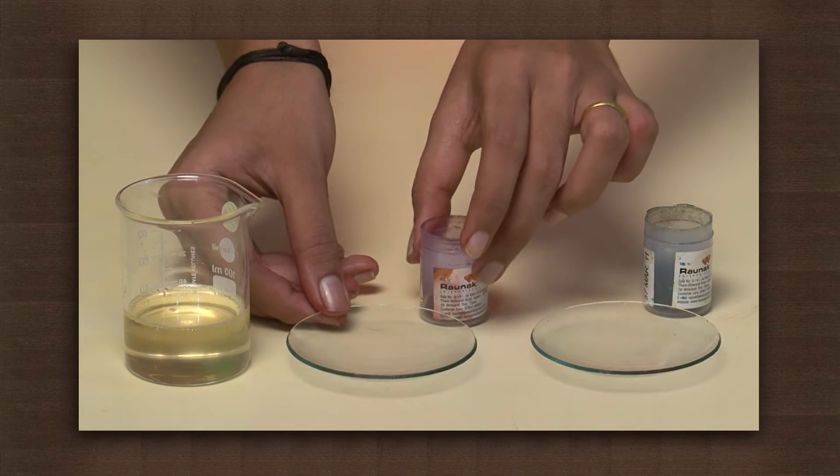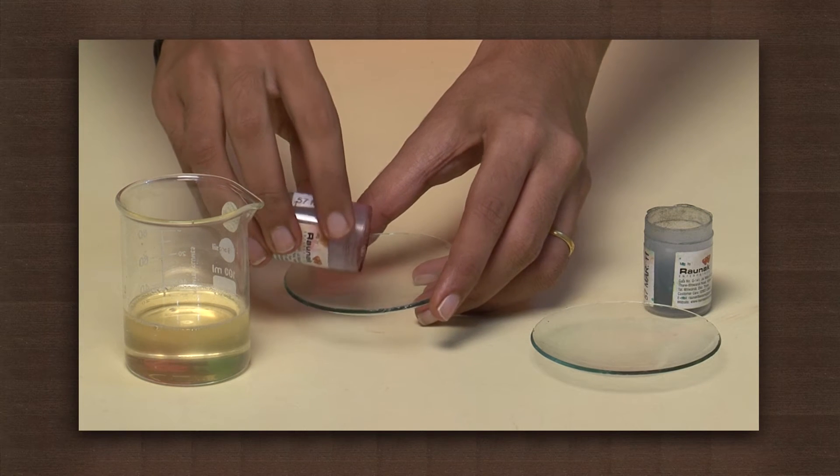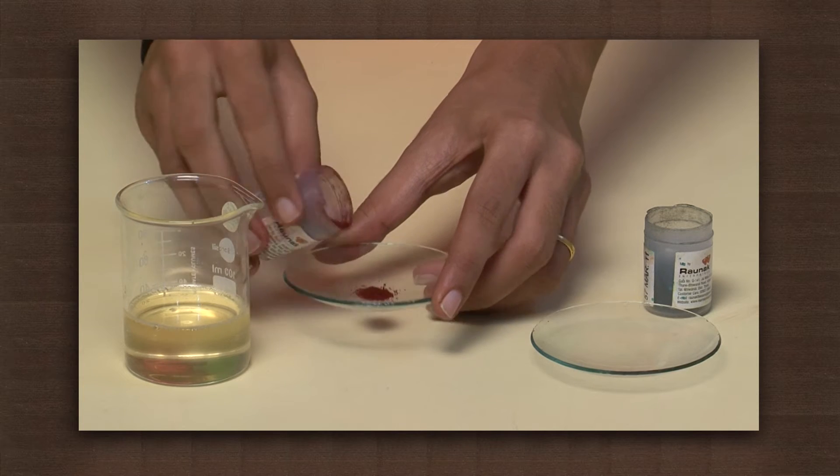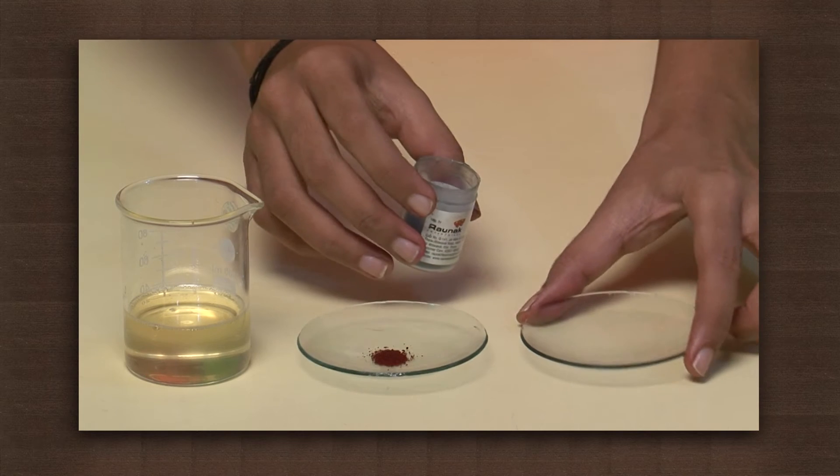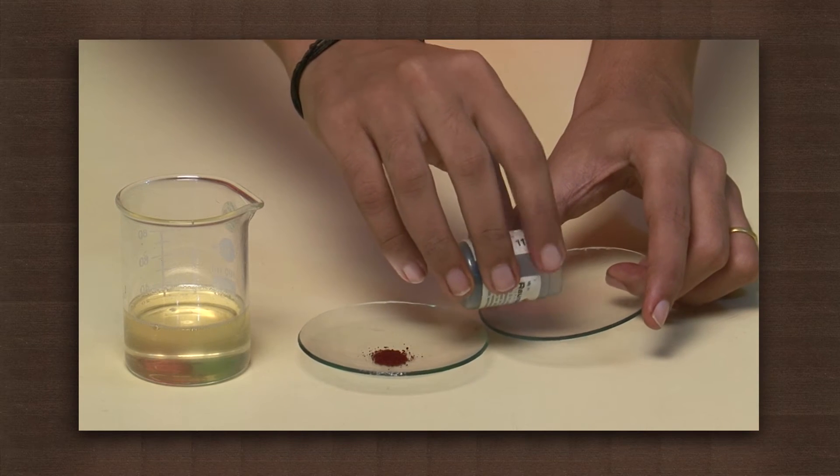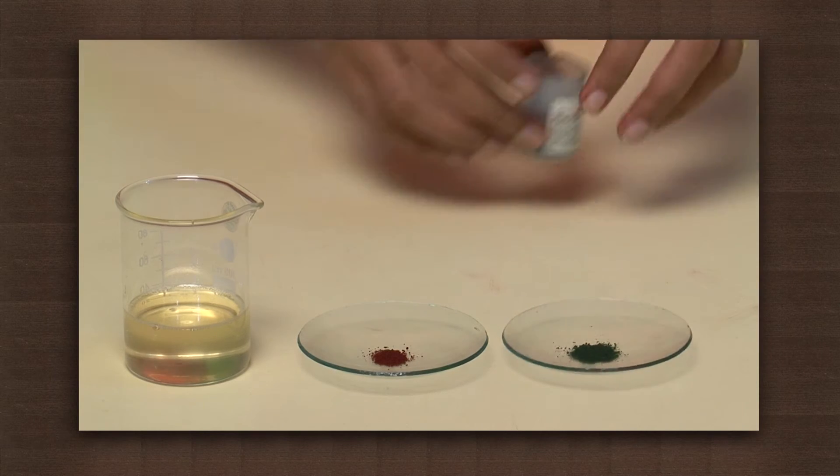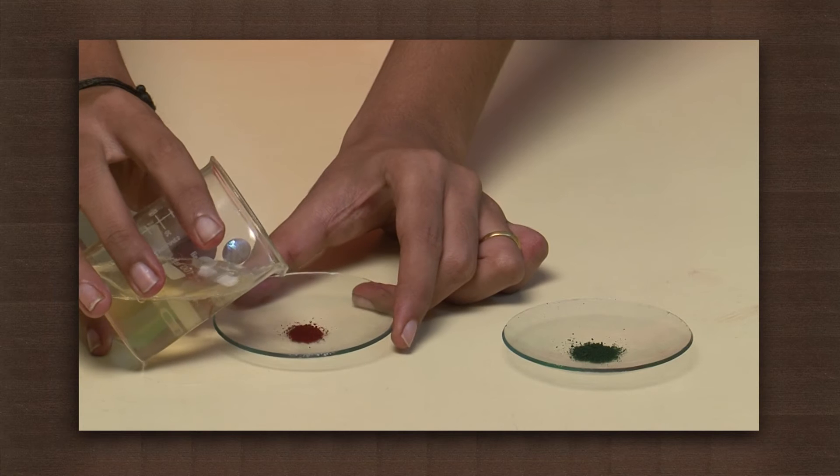Take a small pinch of red and green watercolors in two watchglasses. Now mix the water-soluble colors in coconut oil.